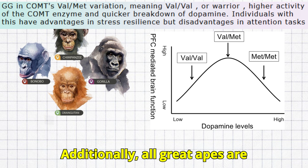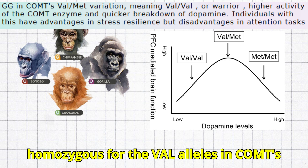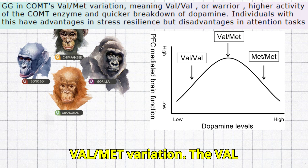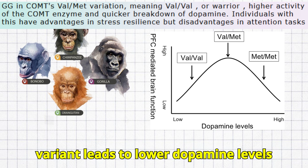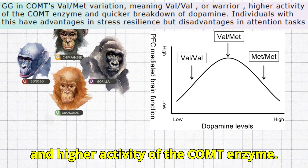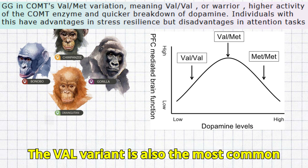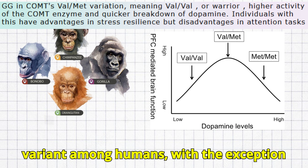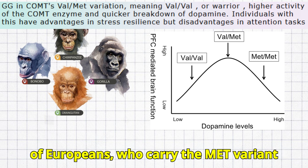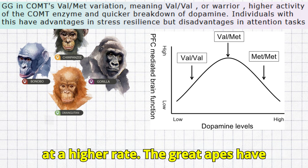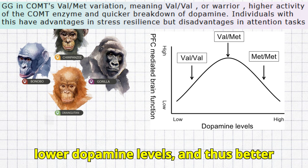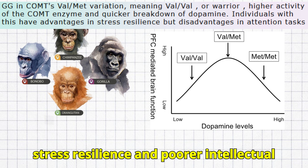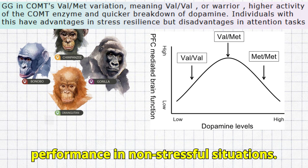Additionally, all great apes are homozygous for the val alleles in COMT's val-met variation. The val variant leads to lower dopamine levels and higher activity of the COMT enzyme. The val variant is also the most common variant among humans, with the exception of Europeans, who carry the MET variant at a higher rate. The great apes have lower dopamine levels, and thus better stress resilience and poorer intellectual performance in non-stressful situations.